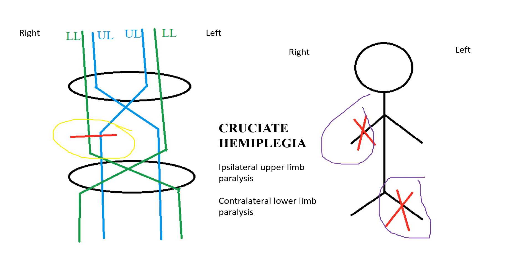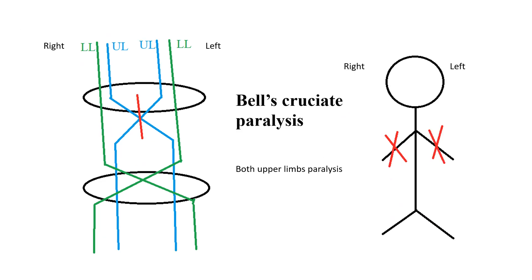The lower limb fibers still have to cross afterwards, so the left-sided lower limb is affected. Such ipsilateral upper limb paralysis and contralateral lower limb paralysis with respect to the site of lesion is termed as cruciate hemiplegia.